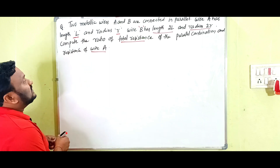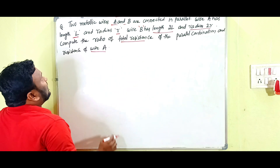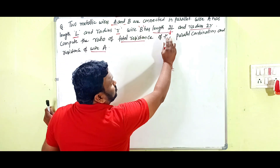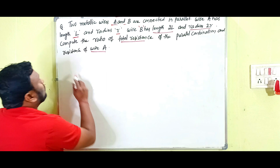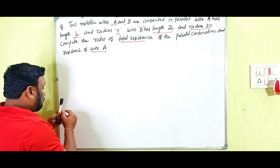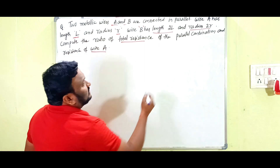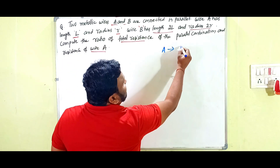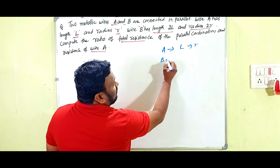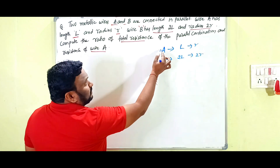The question is: two metallic wires A and B are connected in parallel. Wire A has length L and radius R. Wire B has length 2L and radius 2R. We need to compute the ratio of the total resistance of the parallel combination to the resistance of wire A.